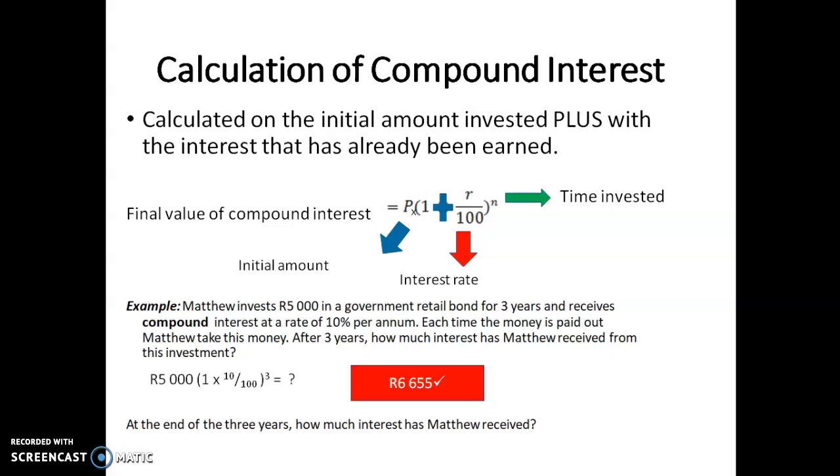The next question says, at the end of the three years, how much interest has Matthew received? Now we just want to know the interest, not the final value. We've got to say 6,655 minus the initial 5,000 rand gives us 1,655. Be very careful that you read the questions carefully.